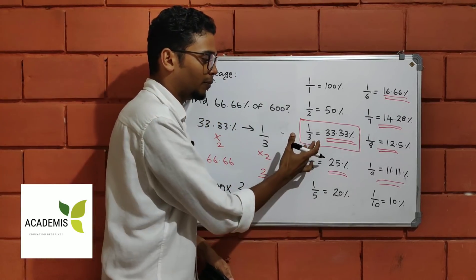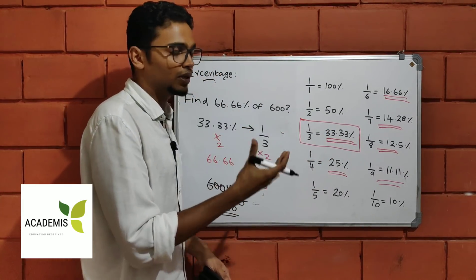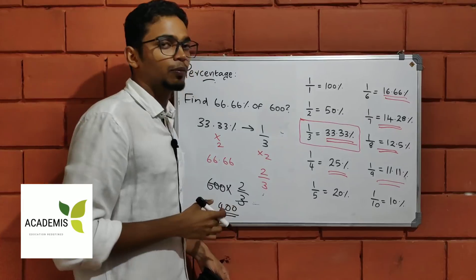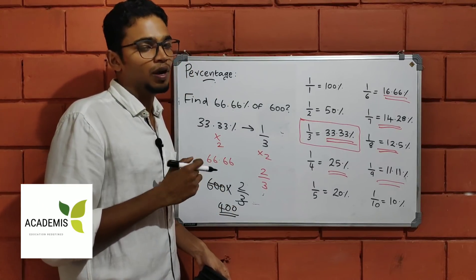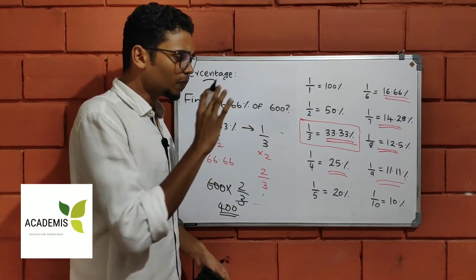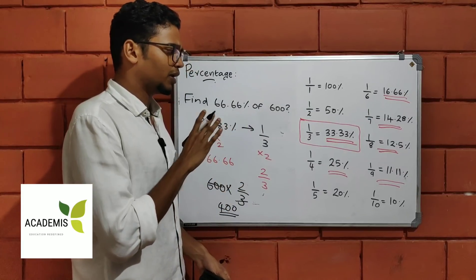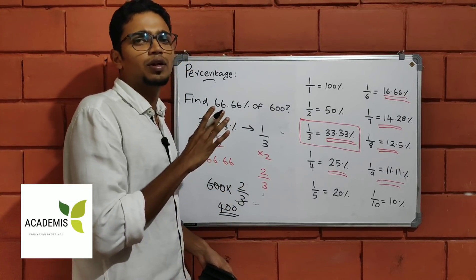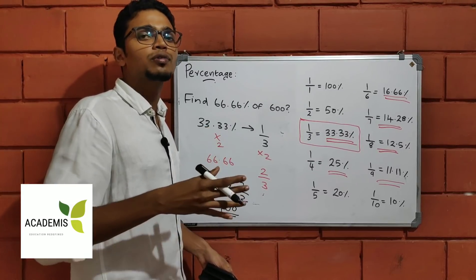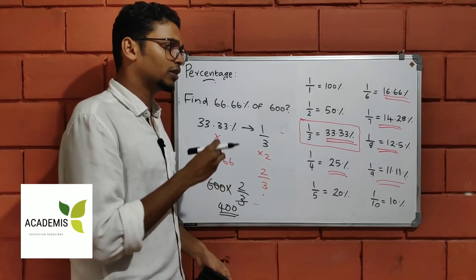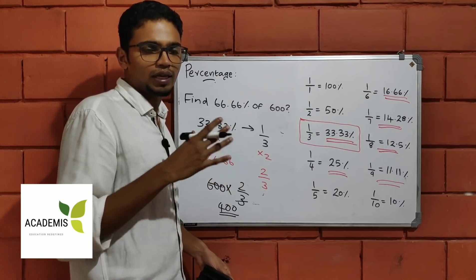If you want to see it, you will see the value of 1 by 3 is 33.33. In the next class, I have a percentage introduction class — this is the higher level class. You have 3 videos. You will see the overall idea of the percentage. We will discuss this in class.